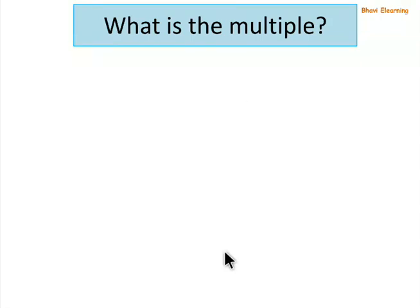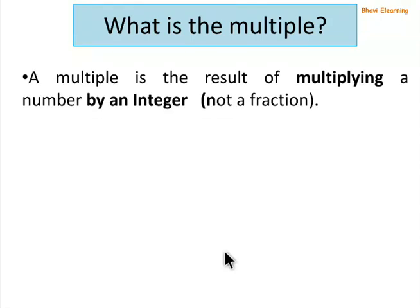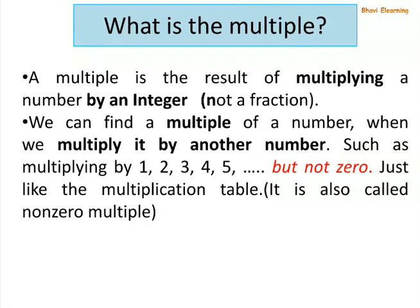What is a multiple? A multiple is the result of multiplying a number by an integer. We can find a multiple by multiplying it with another number, such as multiplying by 1, 2, 3, 4 and so on, but not 0. Just like the multiplication table.